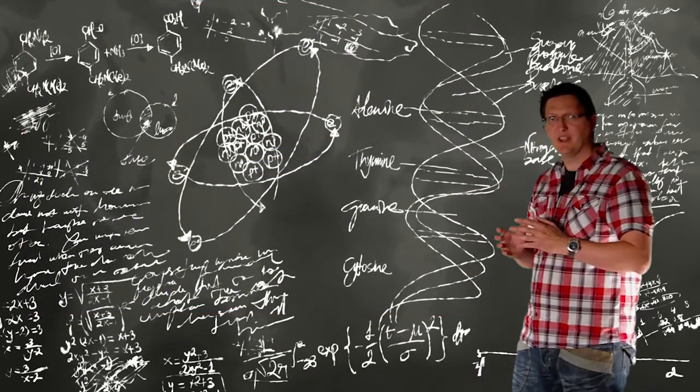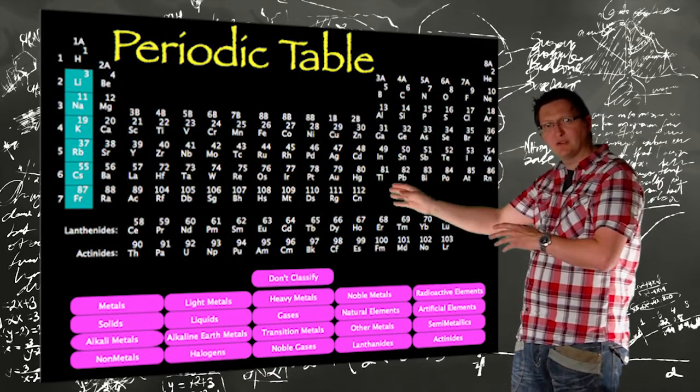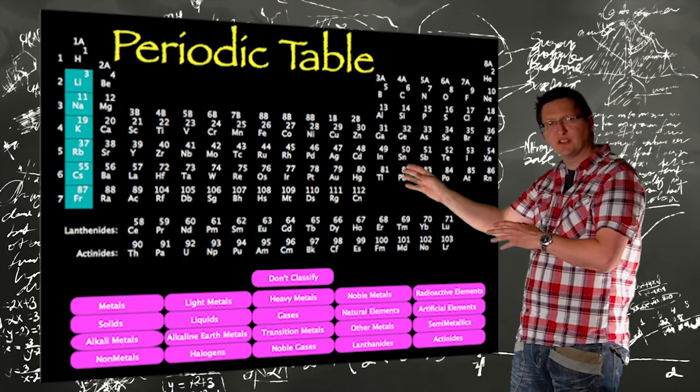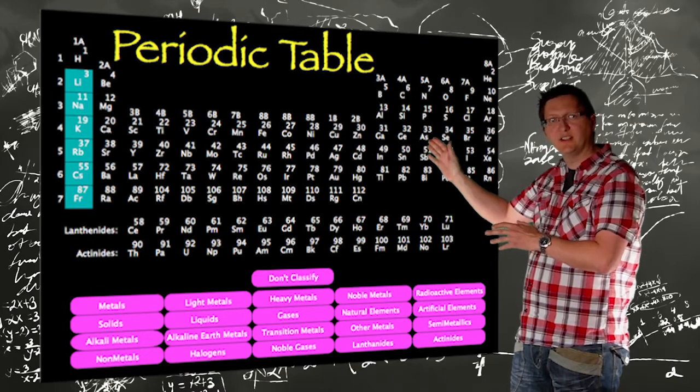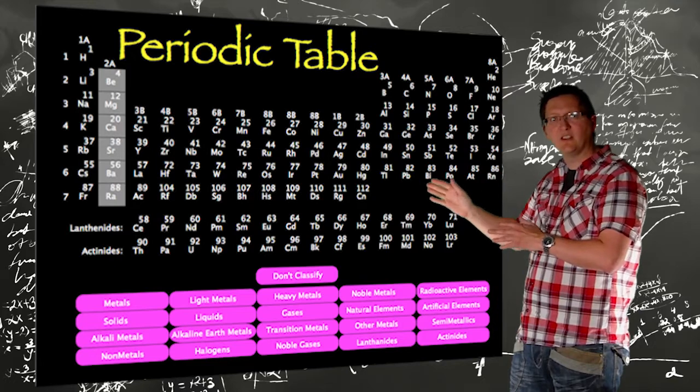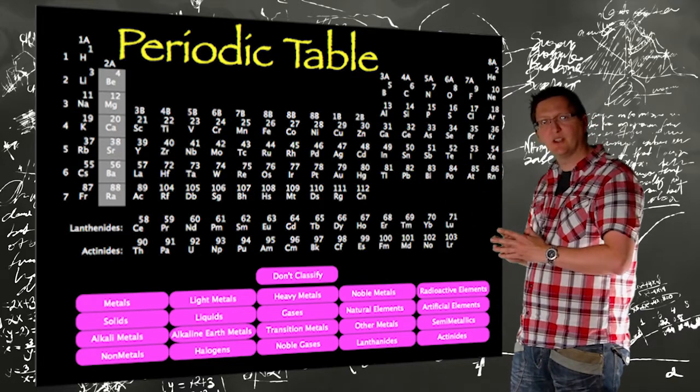If we have a look at the periodic table here, we can see that the alkaline metals lying over to the left have similar reactivity. The next column, the alkaline earth metals, again have similar reactivity. The reactivity increases as you go down the column.